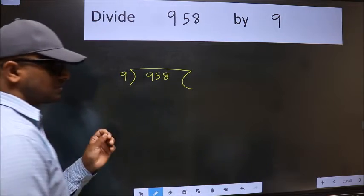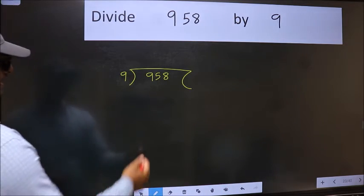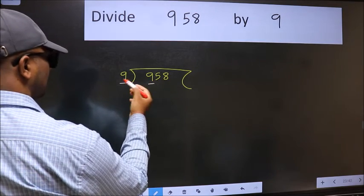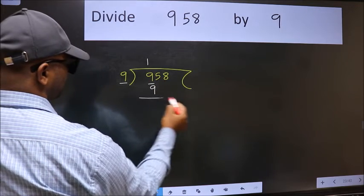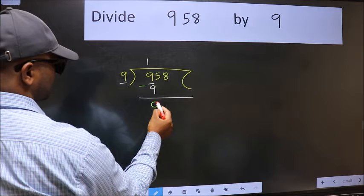This is your step 1. Next, here we have 9 and here 9. When do we get 9 in the 9 table? 9 once is 9. Now we should subtract. We get 0.